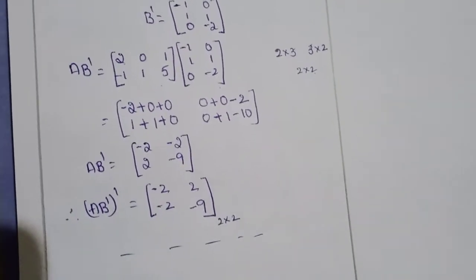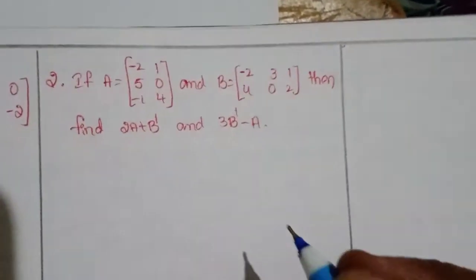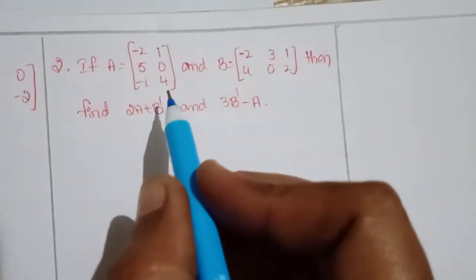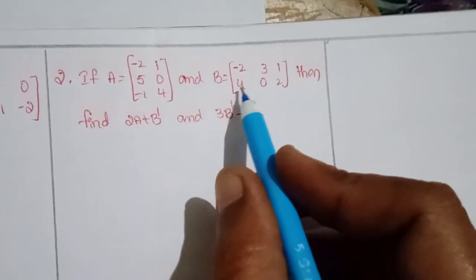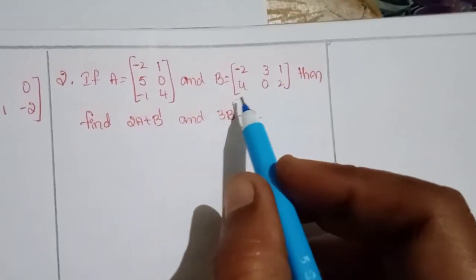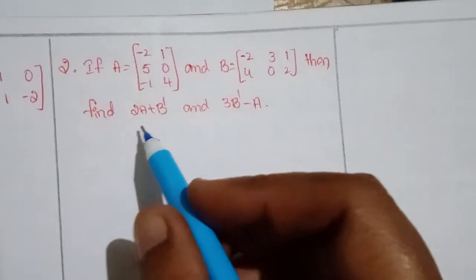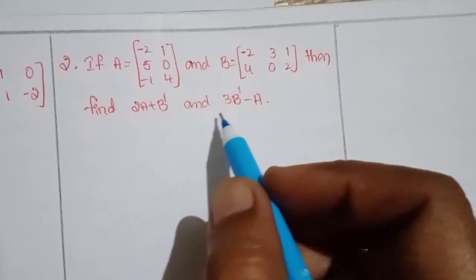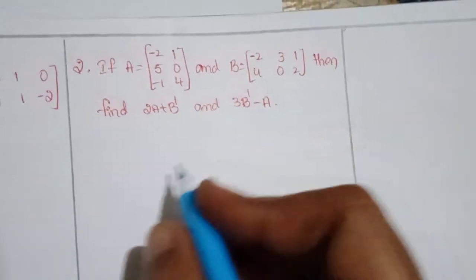Problem 2: If A = [-2, 1, 5; 0, -1, 4] and B = [-2, 3, 1; 4, 0, 2], find (i) 2A + B^T and (ii) 3B^T - A.